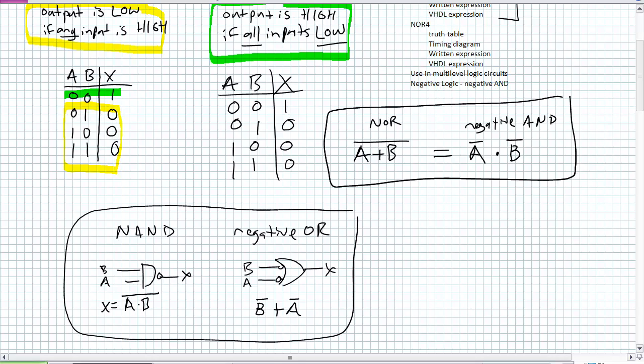We're just about done with our bonus round of logic gates. We've discussed the NOT, AND, OR, NAND, NOR, and the negative logic equivalents — negative OR and negative AND. All we've got left are two: the exclusive OR and the exclusive NOR, which we're going to go over in the next lecture.